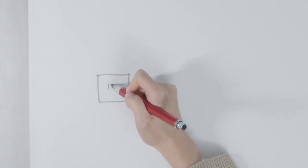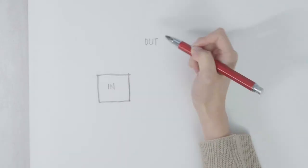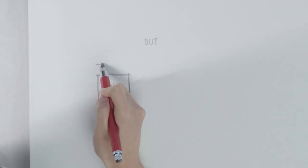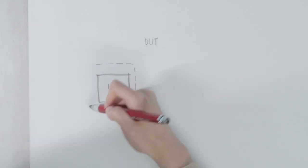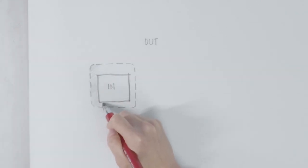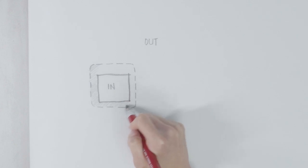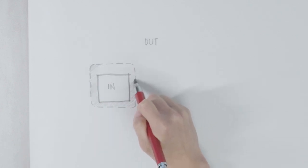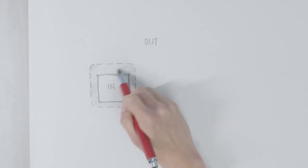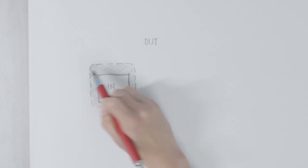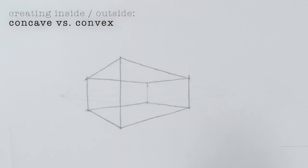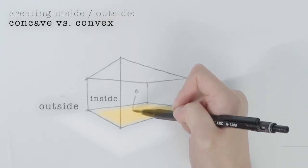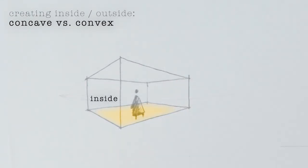Inside and outside are of course interlinked. You can't create an inside without shaping the outside, and the link provides a transition between inside and outside. Concave spaces make it feel like you're inside and convex spaces make it feel like you're outside.